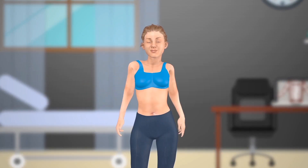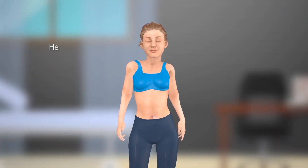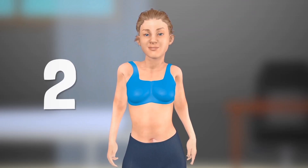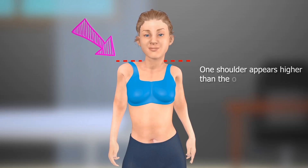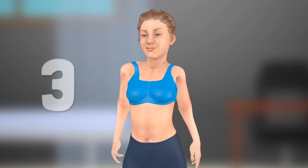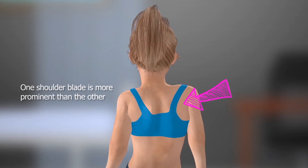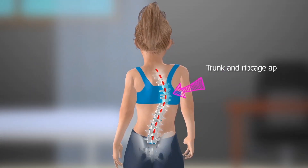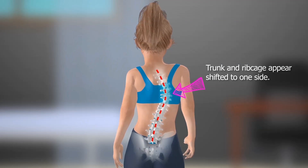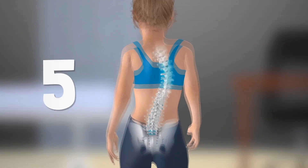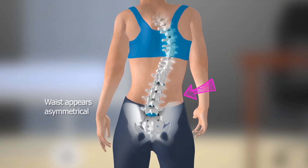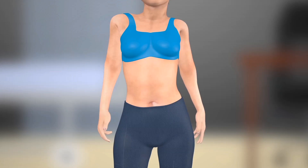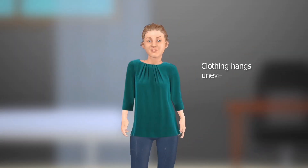Several things to look for when screening for scoliosis include: one, head appears off-centered between the hips; two, one shoulder appears higher than the other; three, one shoulder blade is more prominent than the other; four, trunk and ribcage appear shifted to one side; five, waist appears asymmetrical; six, one hip appears lower than the other; and seven, clothing hangs unevenly.